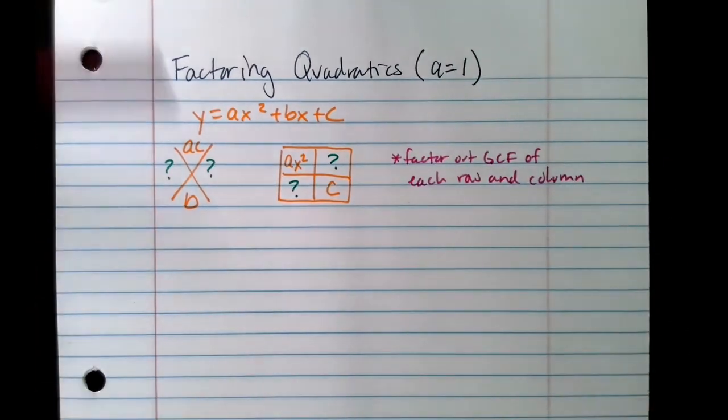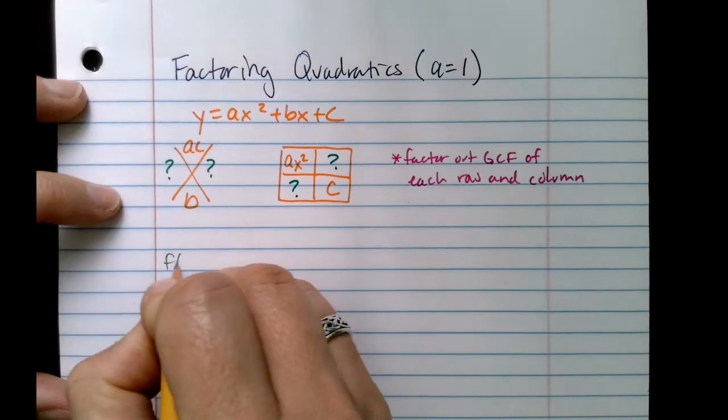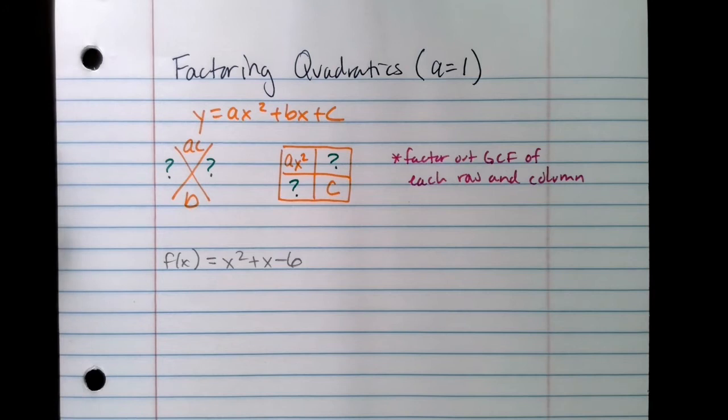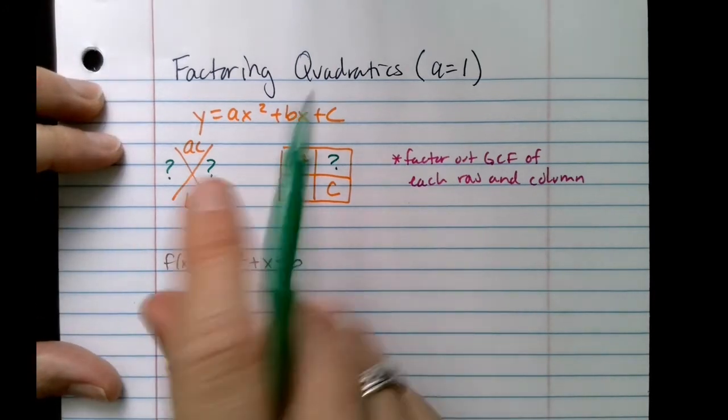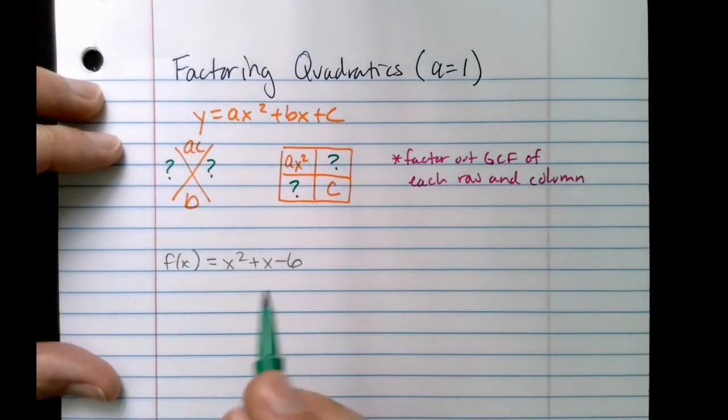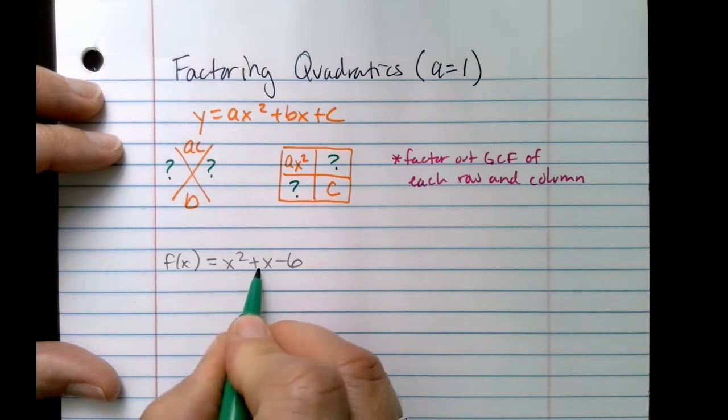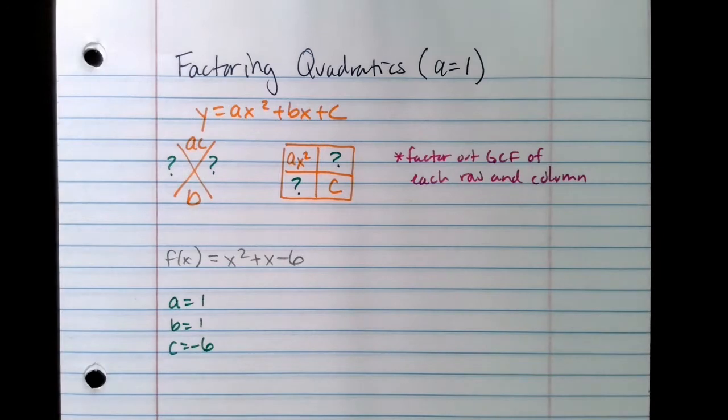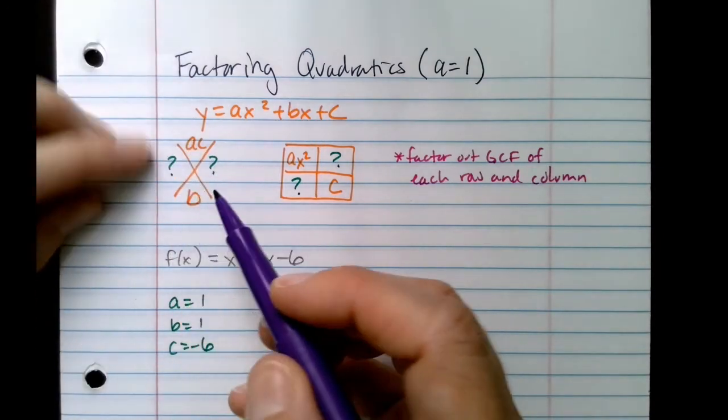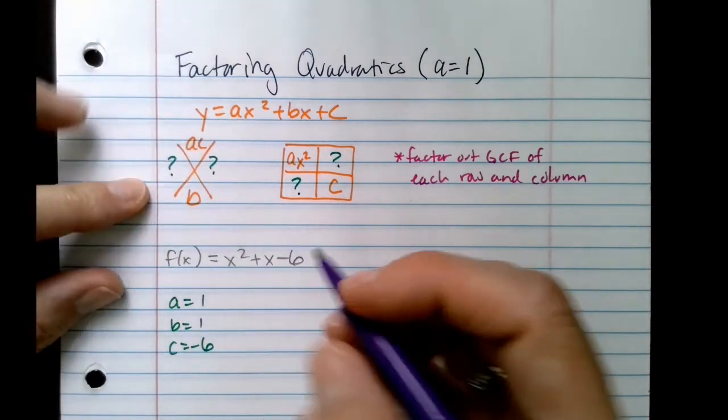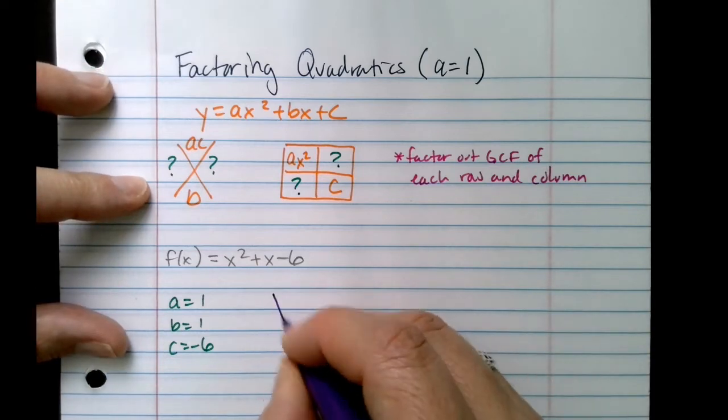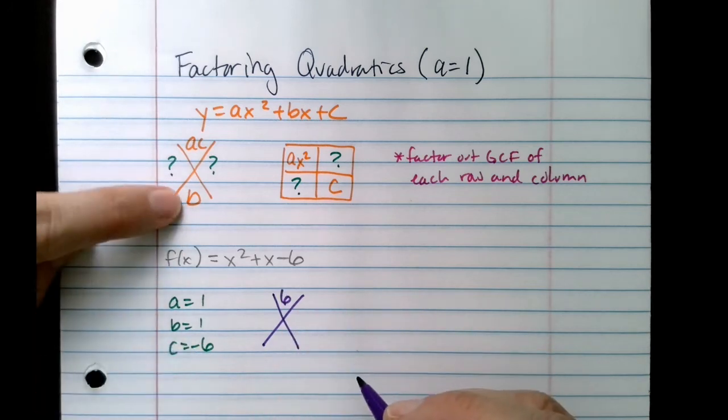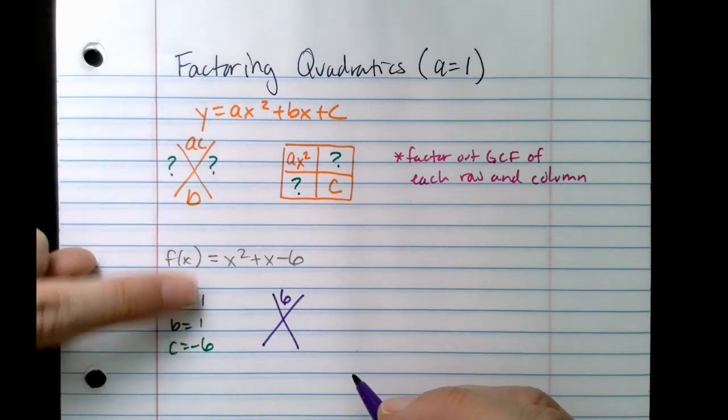Let's look at an example to illustrate this. My first step is to figure out what are my ABCs. Remember, your ABCs are the numbers in front. So in this case, a is 1, b is 1, c is negative 6. Next, I want to do my little factor cross here and figure out what the products are. So I'm going to do a times c, so 1 times 6 is 6.